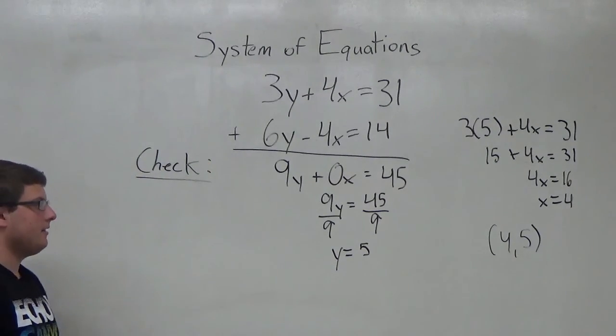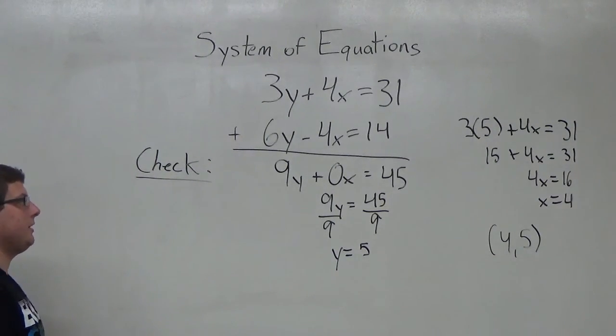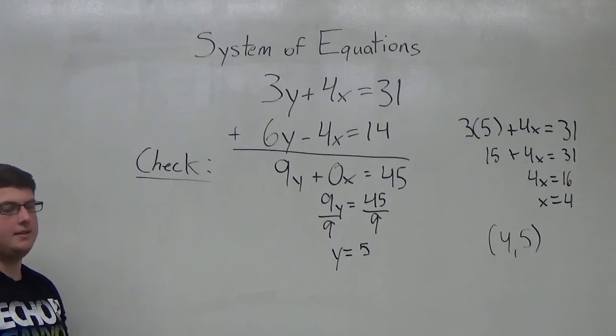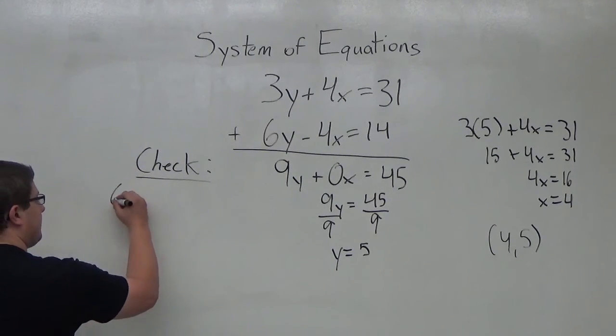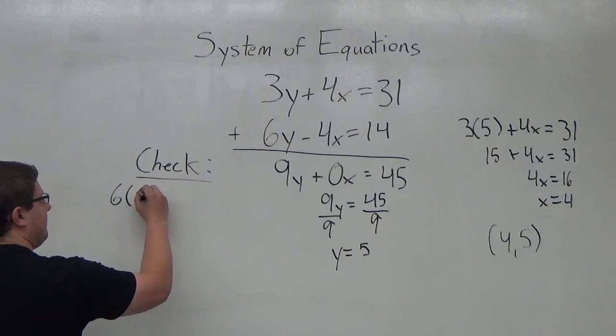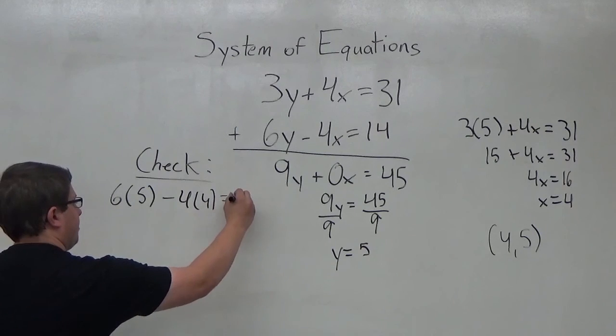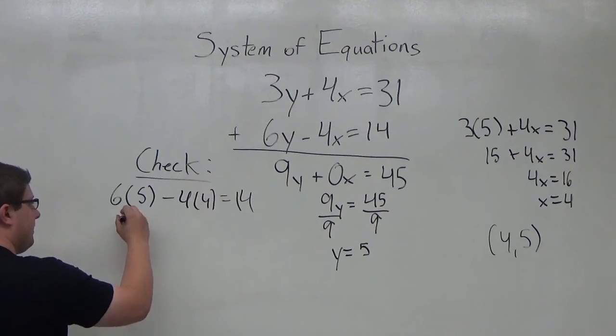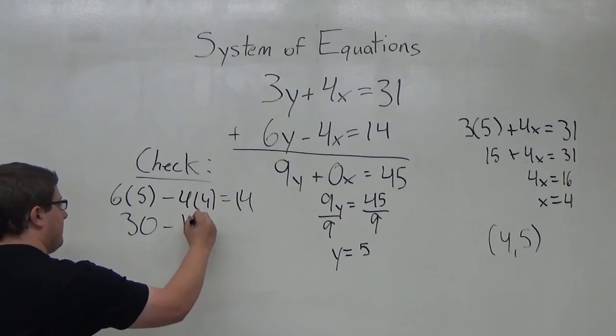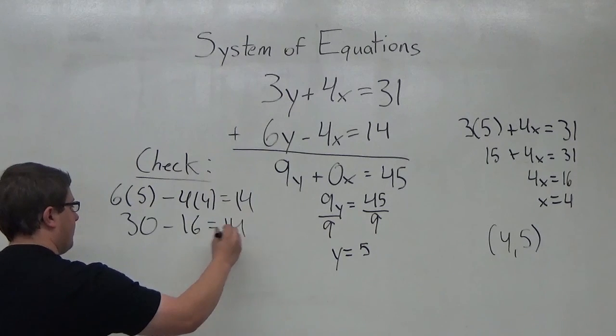I'm going to take the point 4 comma 5 and plug it into the other equation in the system. So I'm going to do 6 times 5 minus 4 times 4. I should get 14. 30 minus 16 equals 14.